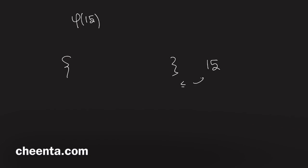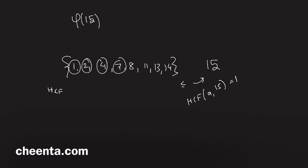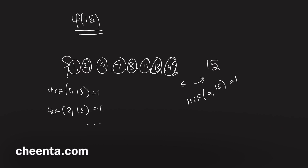Let me give one more example to make this absolutely clear. What is φ(15)? Take 15 and find all numbers less than or equal to 15 which have GCD 1 with 15. Those numbers are 1, 2, 4, 7, 8, 11, 13, and 14. The HCF of each of these with 15 is 1. So φ(15) = 8, since there are 8 elements in this set.